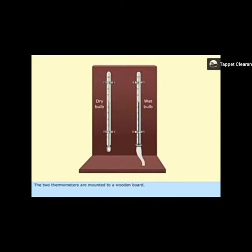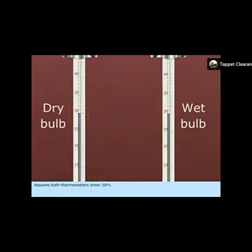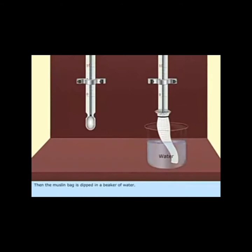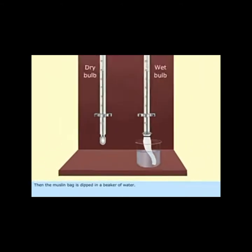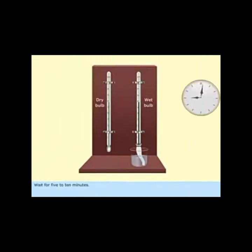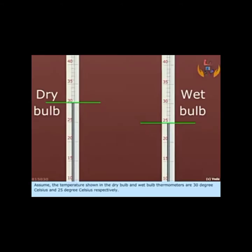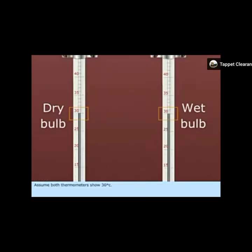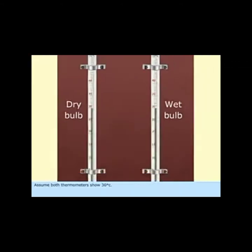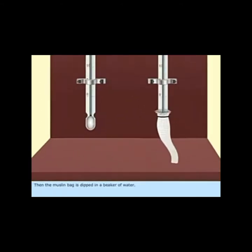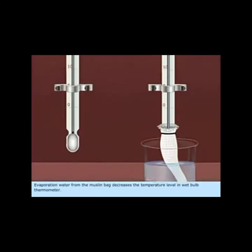The dry bulb registers the normal air temperature. The wet bulb will ordinarily show a temperature reading lower than that of the dry bulb thermometer. The difference in temperature is detected by the humidity in the air. In some cases, the temperature may be the same, which implies that there is a relative humidity of one hundred percent.